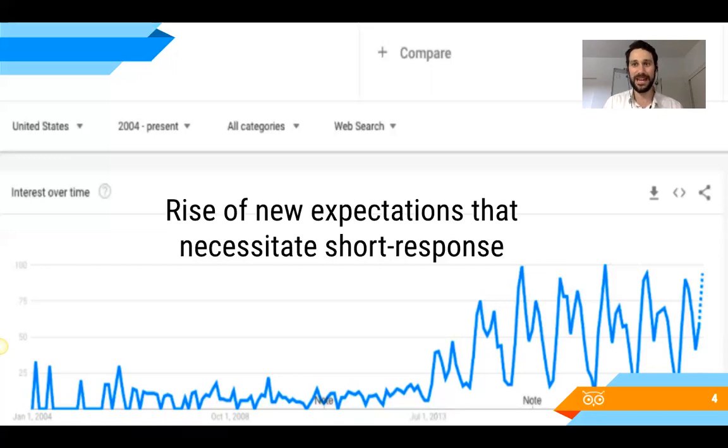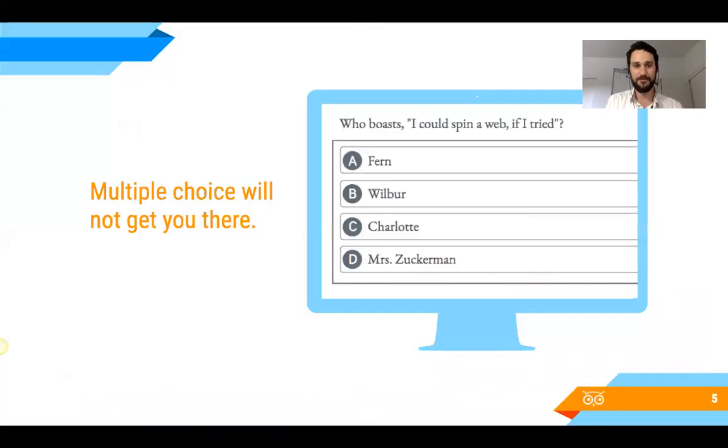When you think about citing evidence, it's pretty hard to do with multiple choice. Frankly, multiple choice might be good for a lot of things, but when it comes to helping us test this skill of citing evidence, you're really limited in what you can do with multiple choice. The alternative is moving beyond multiple choice to having assessments that are based around short response, which is what we're seeing now in many state tests.